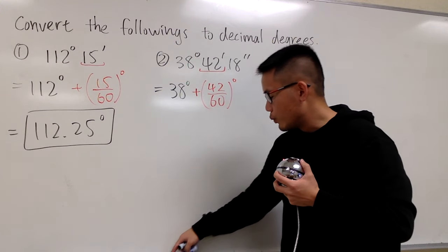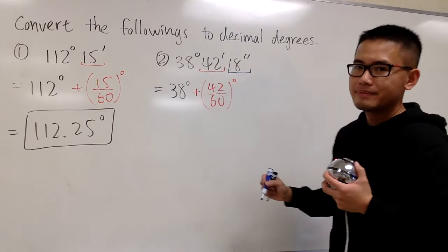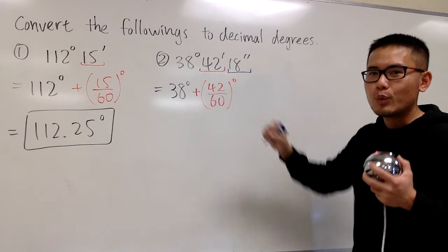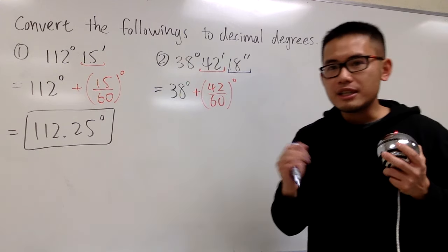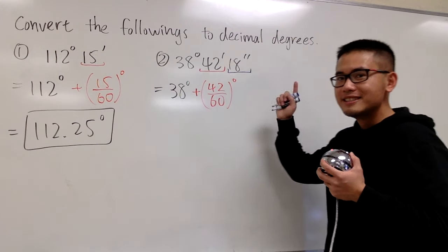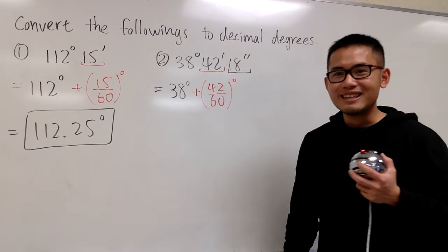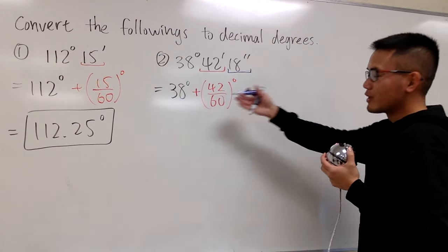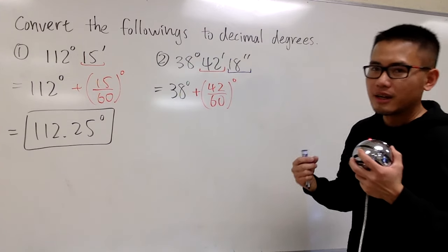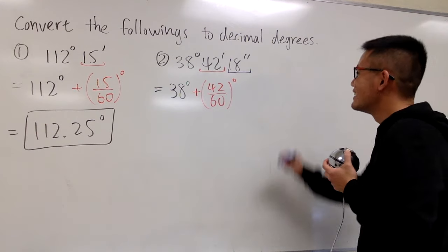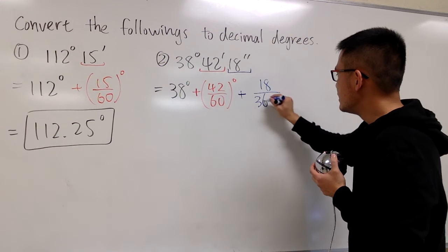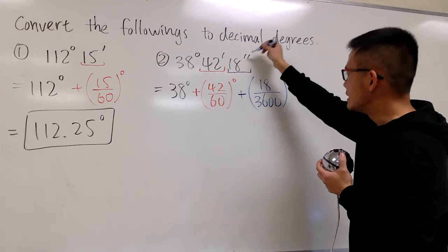For the last part, we have 18 seconds. There are 3600 seconds in 1 degree. You can think of it this way: a degree is like 1 hour — there are 60 minutes in 1 hour and 3600 seconds in 1 hour. Degrees, minutes, and seconds represent units for very small angles. So we add 18 divided by 3600 to change the seconds into degrees.